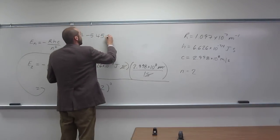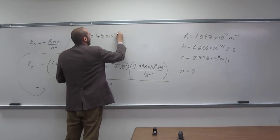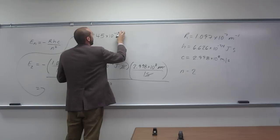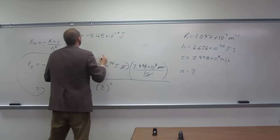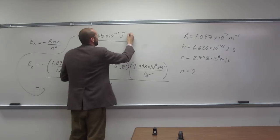So, times 10 to the negative 19 joules. Joules per atom.